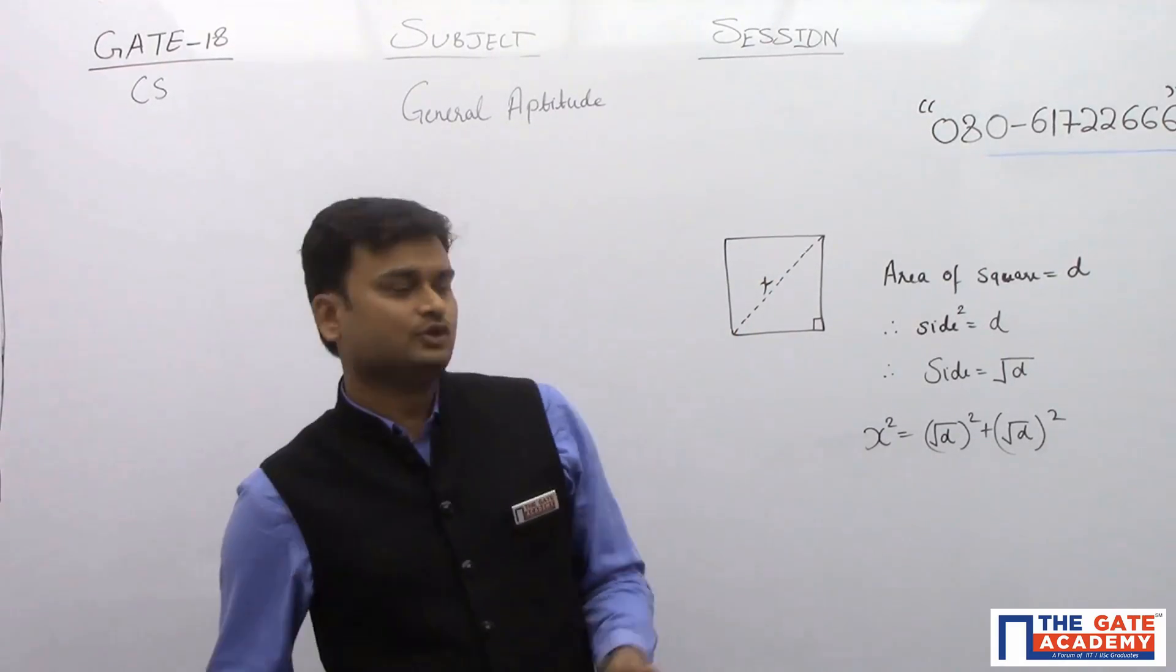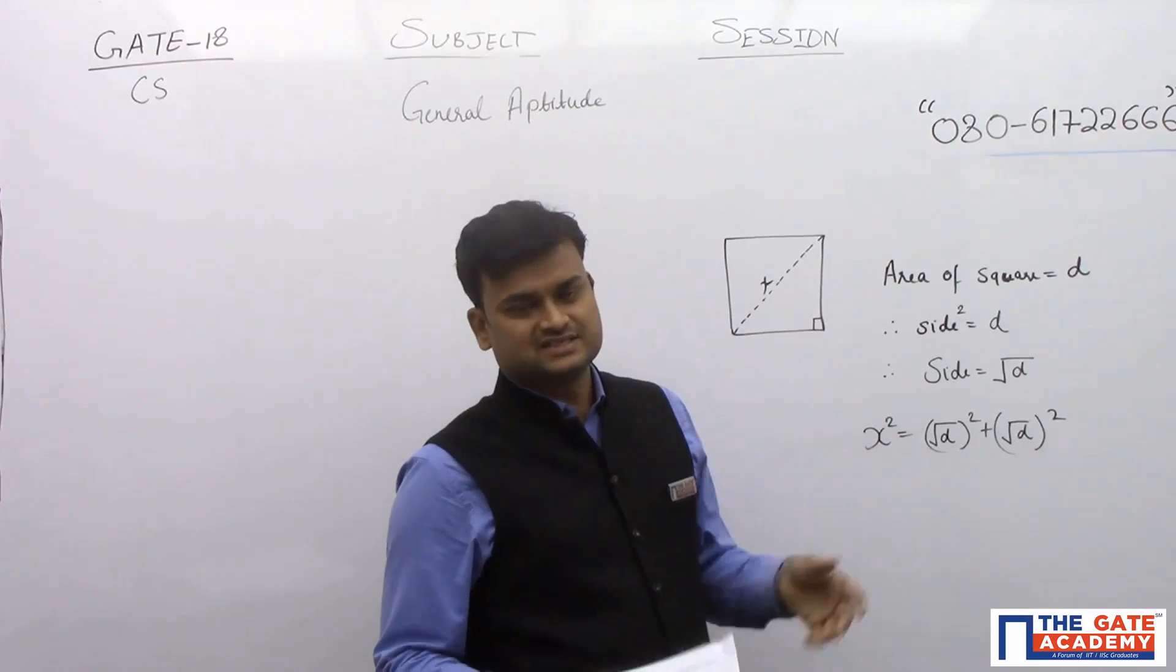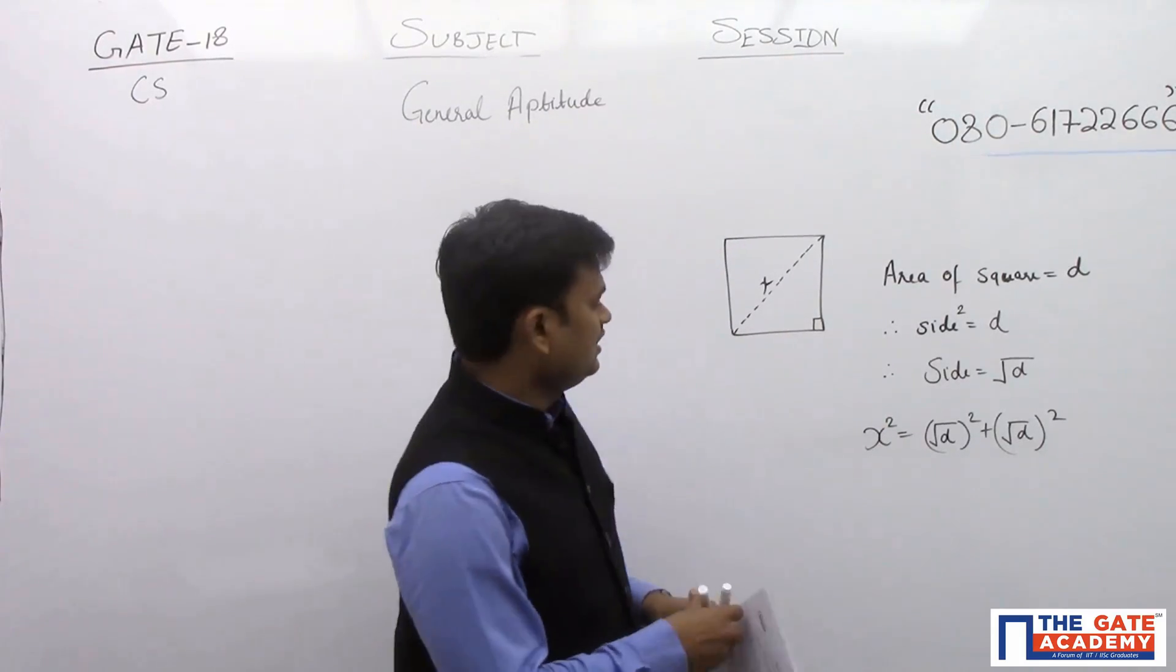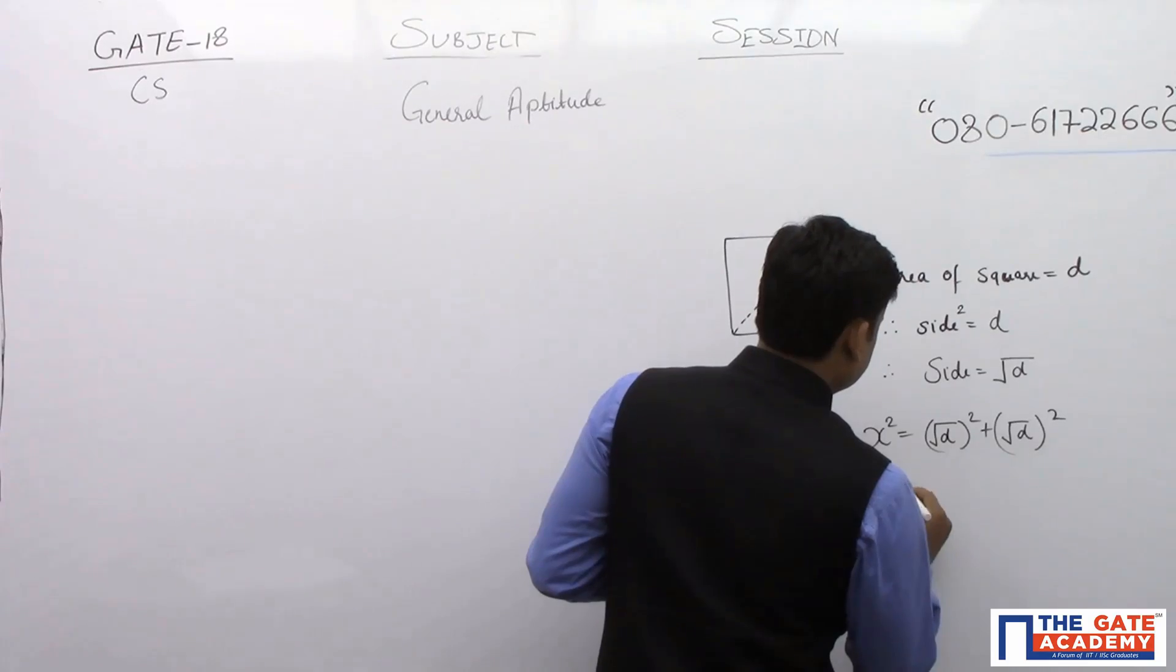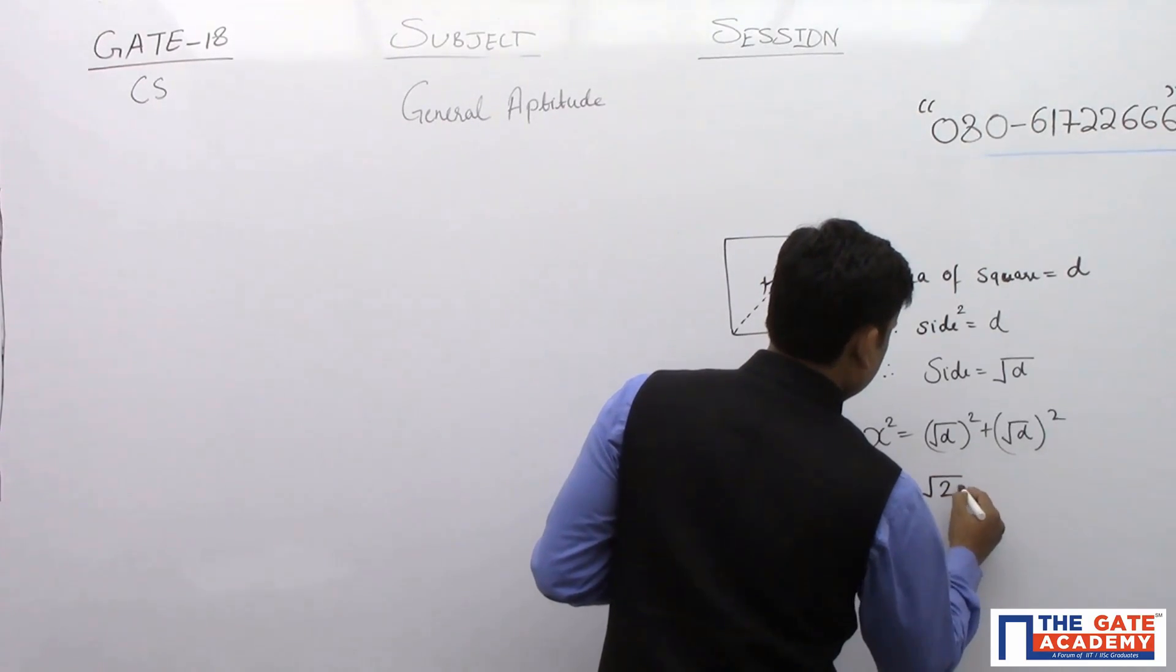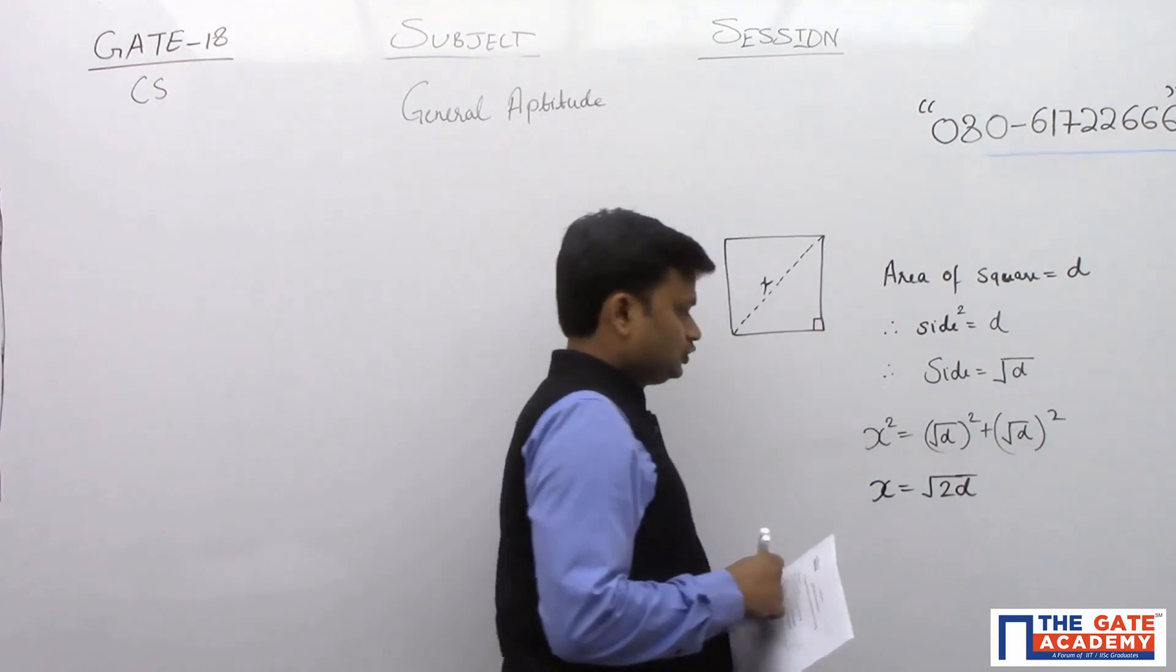If you do not know the formula, you can apply the Pythagoras theorem by which you can find out the value of the diagonal. So diagonal will be root of 2D.